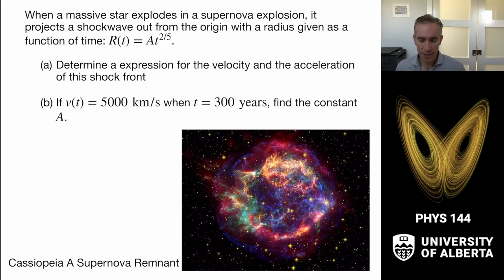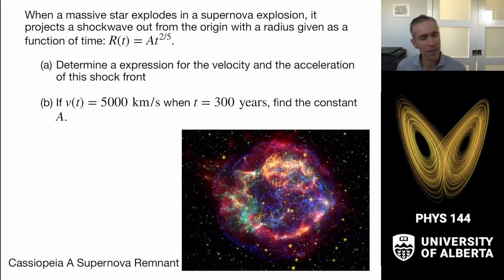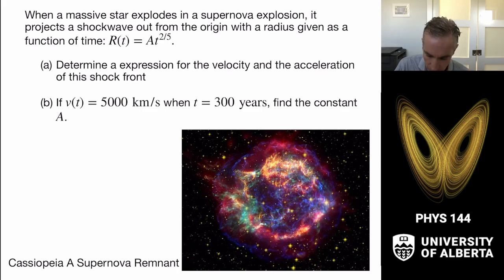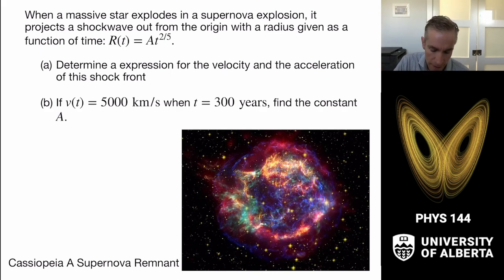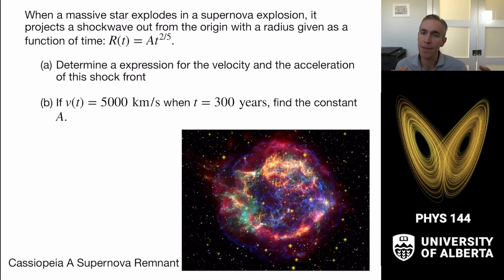The first example is a case from astrophysics. When a massive star dies at the end of its life, it explodes in a supernova explosion. This explosion puts out something like 10 to the 44 joules of energy into the interstellar medium — the gas inside the galaxy — and blasts a shock wave outward. This is a picture of the Cassiopeia A supernova remnant, expanding outward into space in a spherical shock front. The radius expands as r = a·t^(2/5), where a is some constant and t is time.